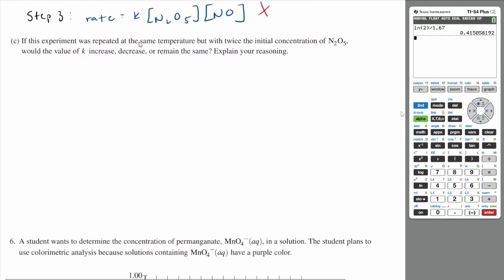If this experiment was repeated at the same temperature, but with twice the initial concentration of N2O5, would the value of k increase, decrease or stay the same? Explain your reasoning.